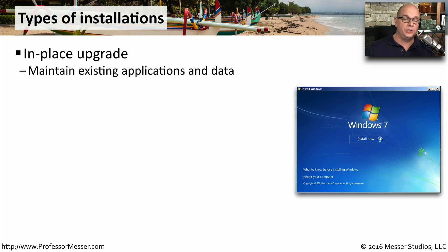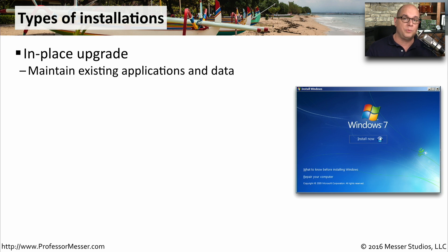There are a few different ways to install an operating system. One is through an in-place upgrade. That means you already have an operating system in place, you already have your documents, you've installed applications, and now you'd simply like to upgrade. If the new operating system allows for an in-place upgrade, you can simply start the upgrade process while the old operating system is running, and it will perform an upgrade and keep everything in place.